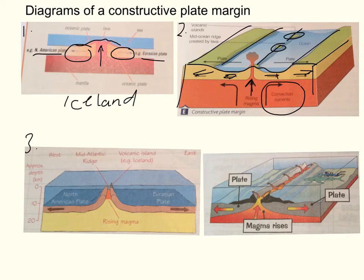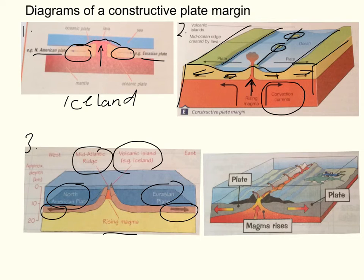Our third diagram, again trying to give a viewpoint of both the side and the top down. So you've got the rising magma, you've got the plates being named, you've got the arrows pulling apart. We've got the ridge being named, and we have a volcanic island labelled, and we've identified that this is Iceland, so just giving that case study depth to it.